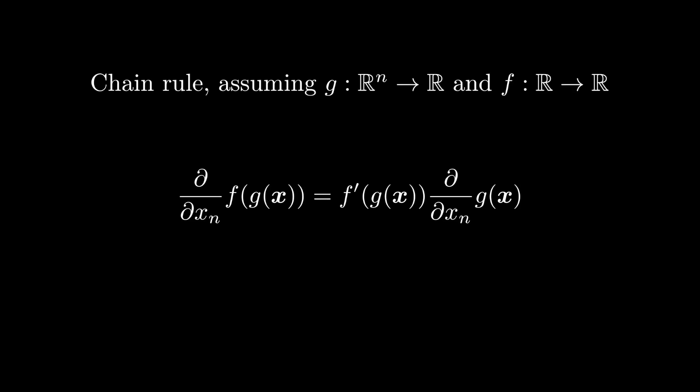The place where things get a little weird is with the chain rule, and you have to kind of pay attention to what situation you're in. Probably the most basic case is where you have a function g that takes in multiple arguments but just produces a scalar, and then you have a function f that takes a scalar and produces another scalar.